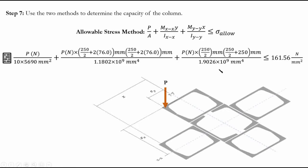Substituting all values into the allowable stress formula — with the axial term P/(10×569) and sigma allowable = 161.56 MPa — and solving the inequality, we find P ≤ 1506.7 kN.